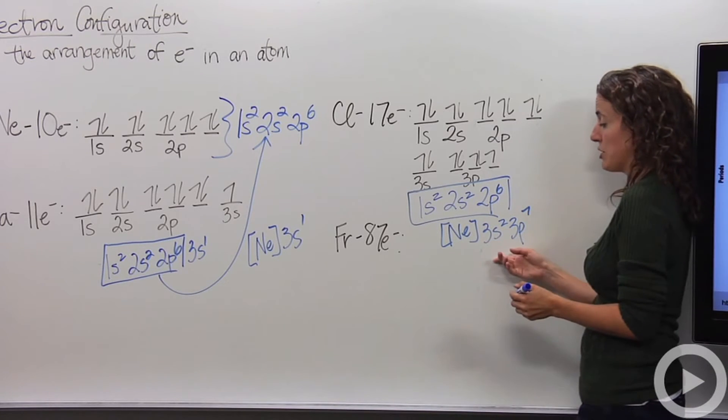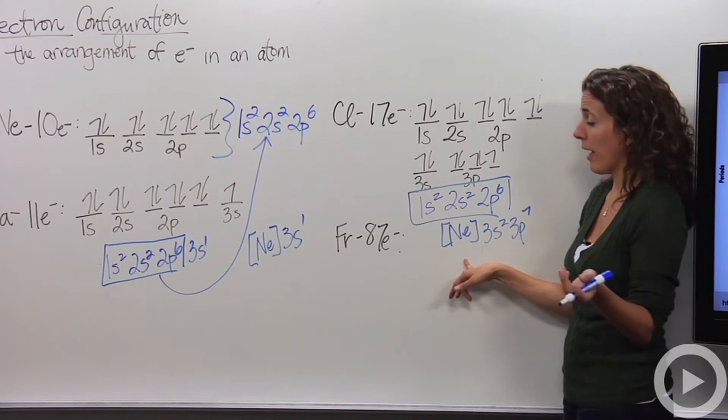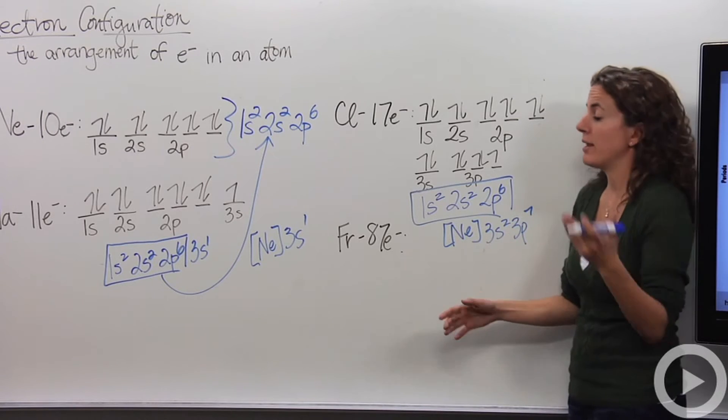So this is the electron configuration for neon. We're going to call these two, this one and this one, the noble gas configuration. So, which is the same thing as electron configuration. It's just a little bit shorter and easier to write, easier to manage.